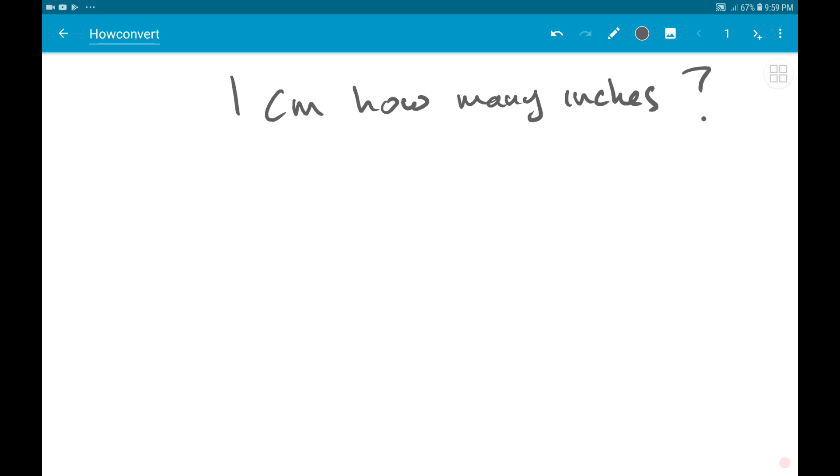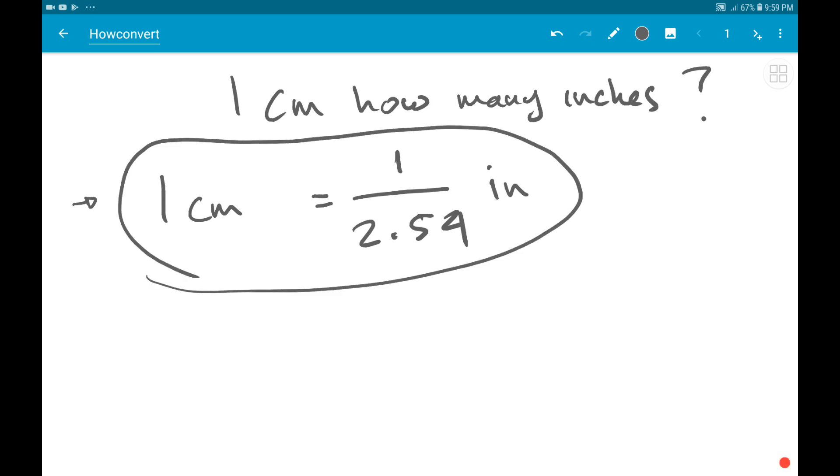Well, the answer is very simple. One centimeter equals 1 divided by 2.54 inches. So this is the formula or the equation. Or if you want to write it as a fraction, 1 divided by 2.54.